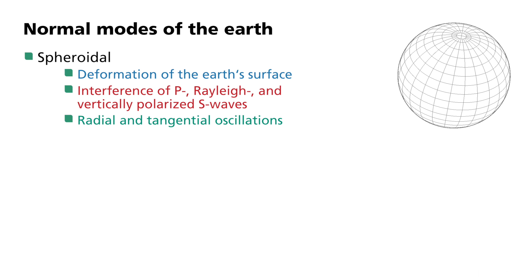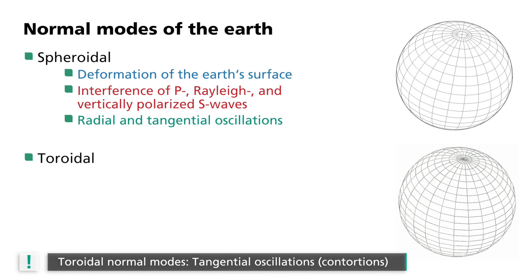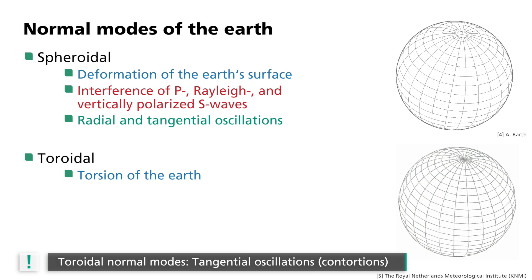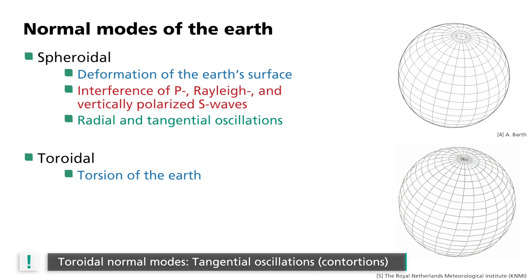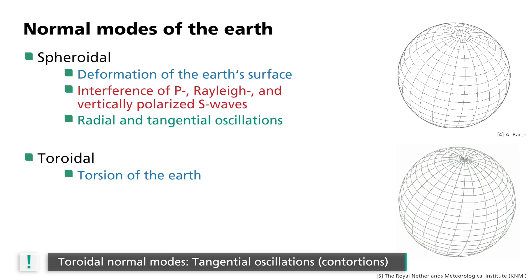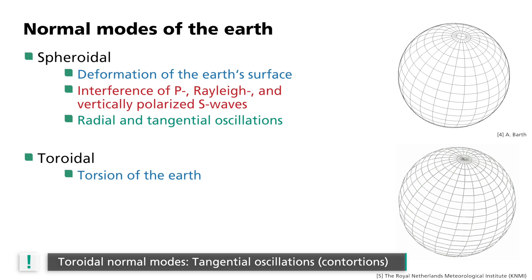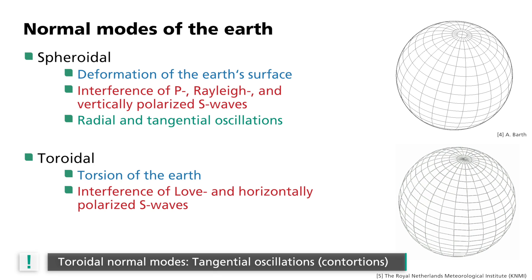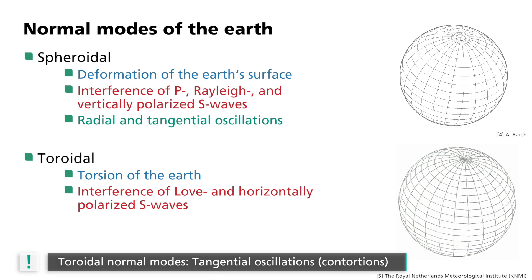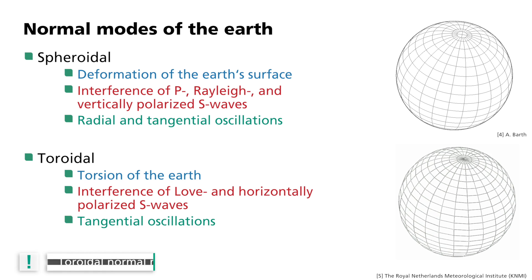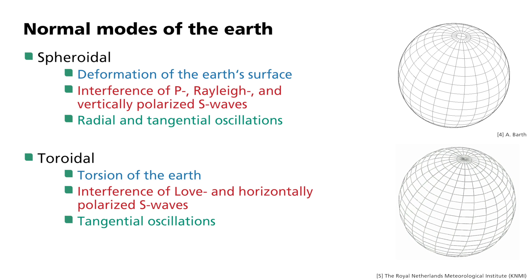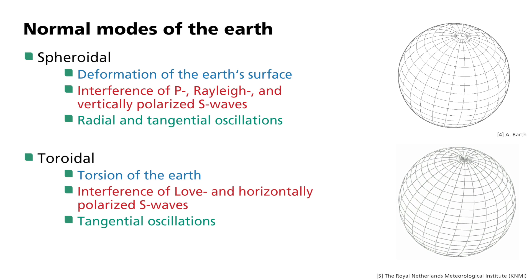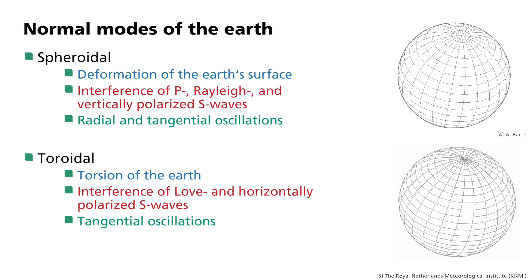In contrast, there are also toroidal normal modes. We can imagine them as a torsion of the Earth. Here, in the simplest case, a rotation of the northern hemisphere relative to the southern hemisphere. Toroidal normal modes originate from interfering love and horizontally polarized S-waves. Hence, in the case of these standing waves, the Earth oscillates exclusively tangentially. Toroidal modes affect only the Earth's mantle and the Earth's crust, since in the liquid outer core, shear waves are not able to propagate.